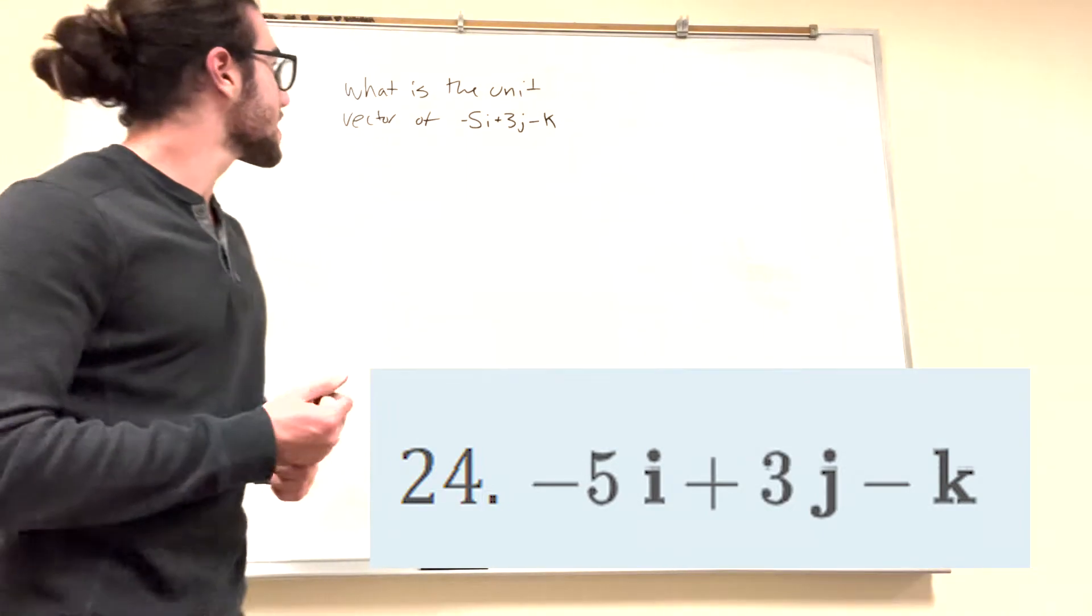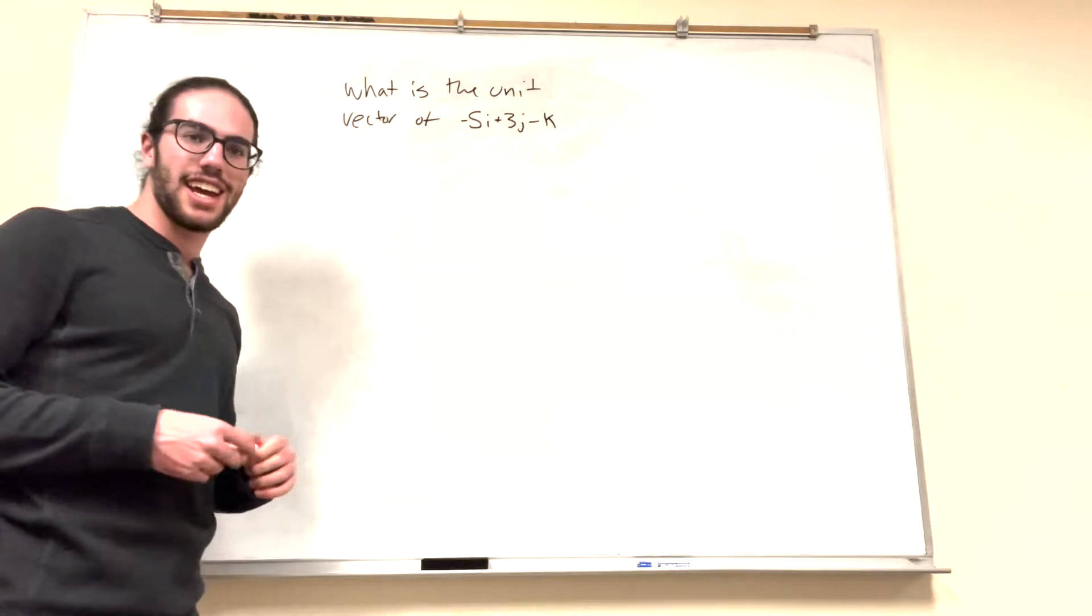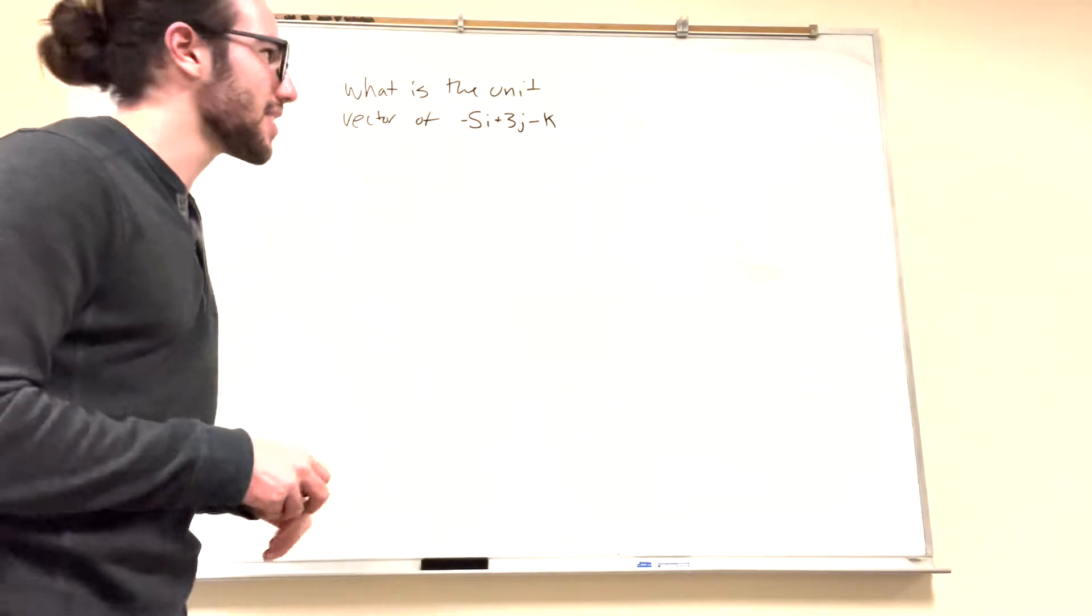What's up, cow gang? Today we've got this problem. It says, what is the unit vector of negative 5i plus 3j plus k? So, how do I solve this?